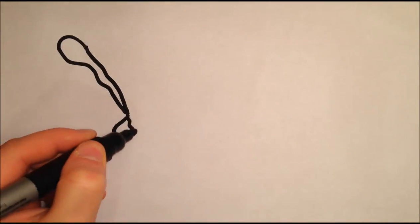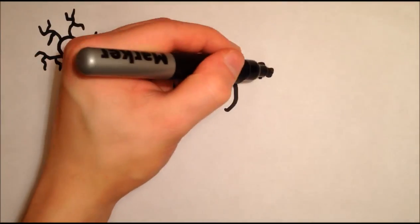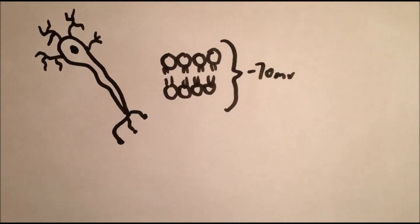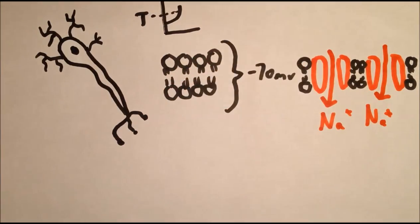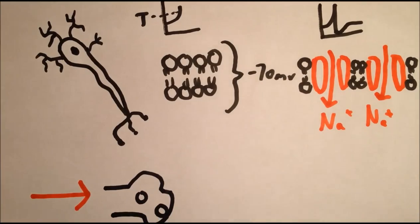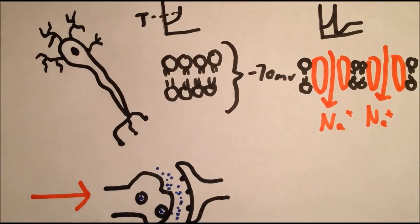In conclusion, neurons are the primary information processing cell of the brain, and much of their information processing capacity is due to the alteration of voltage across their membrane. At rest, the inside of the cell is maintained at a slightly negative voltage, due to the action of sodium-potassium pumps. But if the voltage inside the cell rises above a threshold value, an action potential is triggered. This propagates along the neuron until it reaches the synapse, where it triggers the release of neurotransmitters, which diffuse across the synaptic cleft and bind to receptors on the postsynaptic neuron, causing the process to repeat.